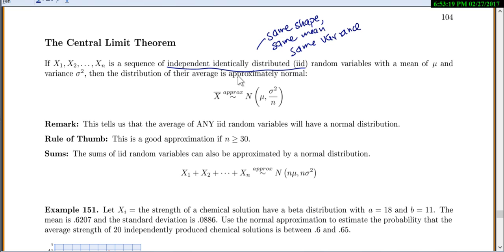It's usually really good as long as n is at least 30. This is for the average. There's also a nice formula for sums. The sums of your IID random variables will also be approximately normal, but the mean is now n times the old mean and n times the variance. One formula for average, one formula for sums. You'll probably want to write both of those down.